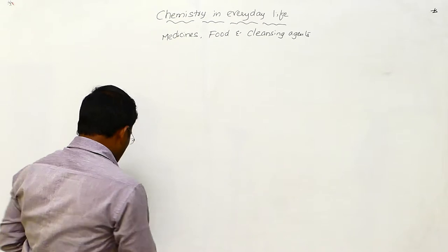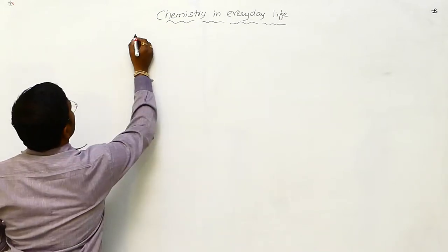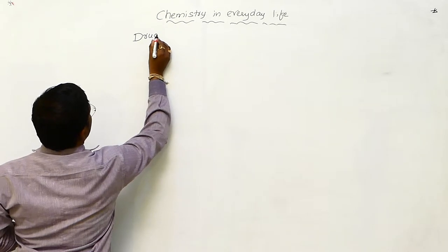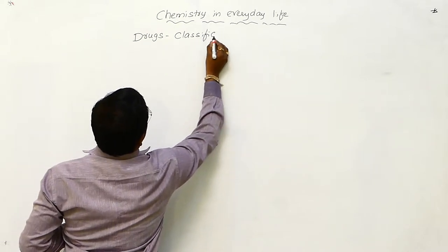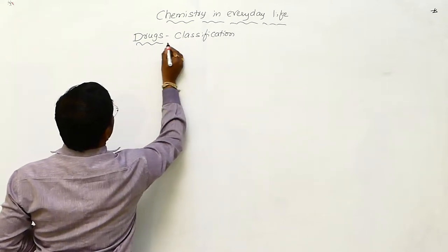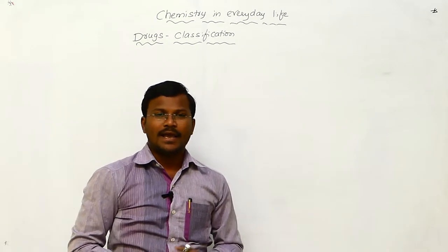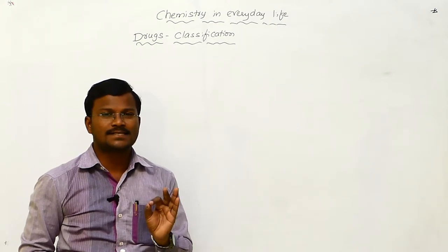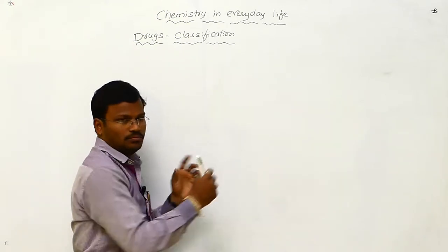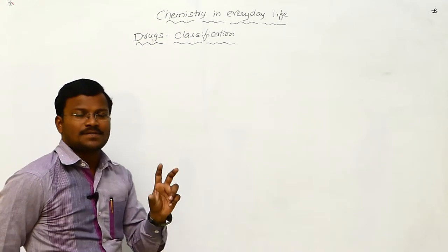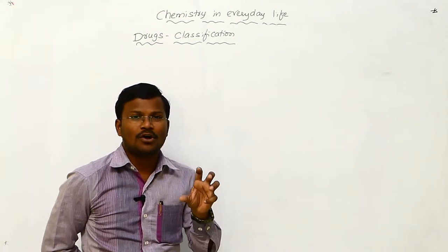Let us start with the most important compounds: drugs, and classification of drugs. Before going to classification, we need to learn what is a drug. A drug is a chemical substance which has a low molecular mass or molecular weight — nearly 100 to 500 u — and these chemical substances, by interacting with macromolecular targets, show their biological response onto living organisms.